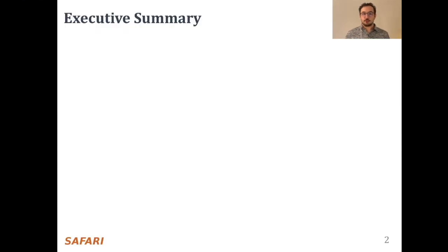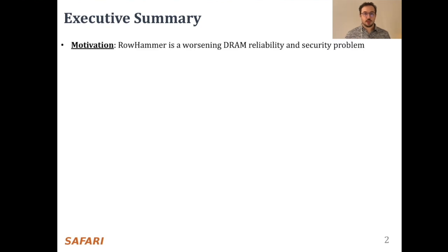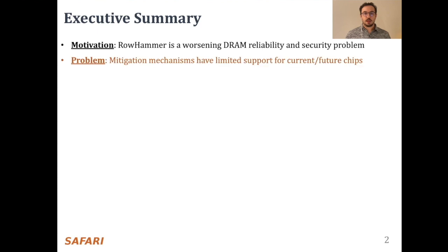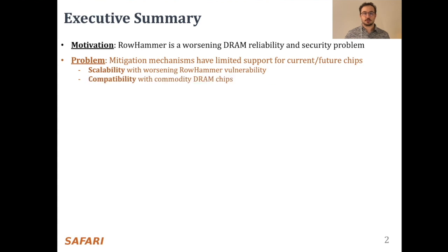I will first begin with an executive summary. Row hammer is a worsening DRAM reliability and security problem. However, state-of-the-art row hammer mitigation mechanisms face limitations supporting current and future commodity DRAM chips because of two reasons: limited scalability with worsening row hammer vulnerability, and limited compatibility with commodity DRAM chips.